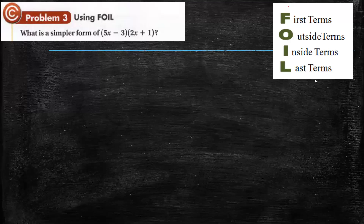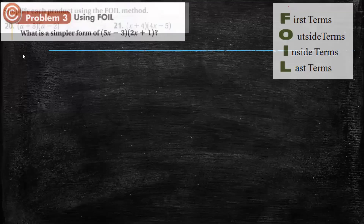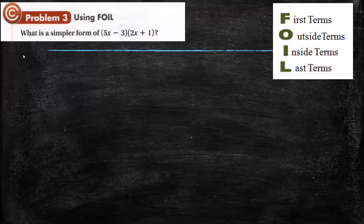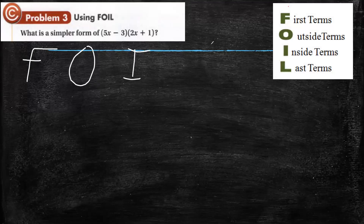Its name is FOIL — F, O, I, L — standing for First, Outside, Inner, and Last.